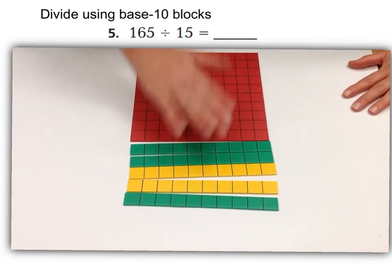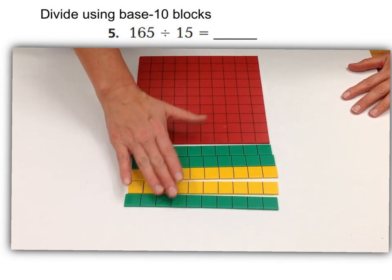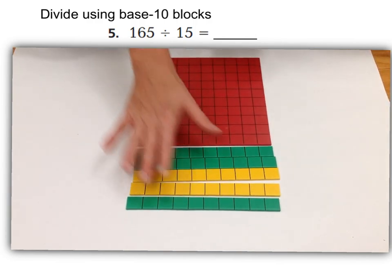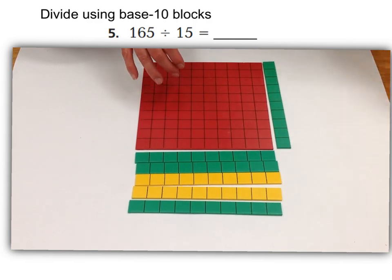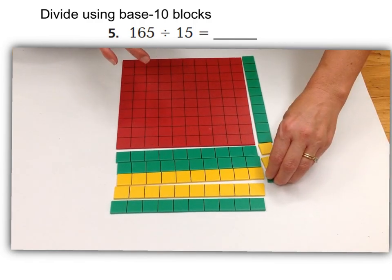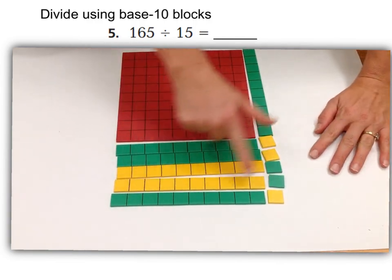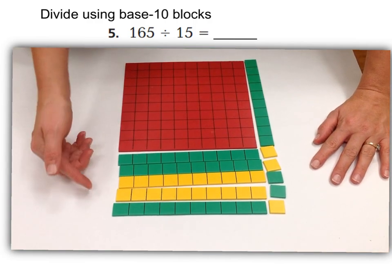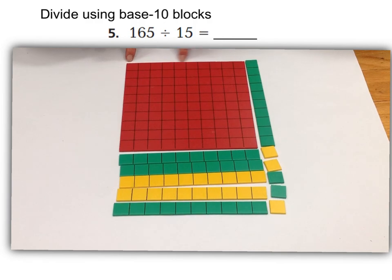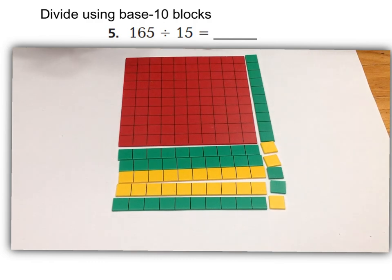Our goal is to create 165 in my array. Right now we only have 100, 10, 20, 30, 40, 50. So let's build our array going this way until we get to 165. 150, 160, and now we're really close. 161, 162, 163, 164, and 165. This shows 165 divided by my 15 will give me this quotient right up top. Let's count it: 10, 11. So 165 divided by 15 would be 11.